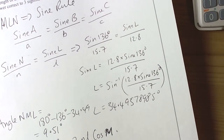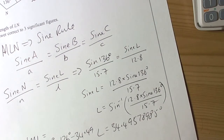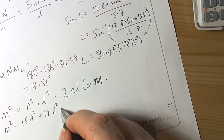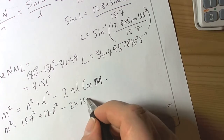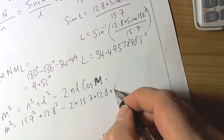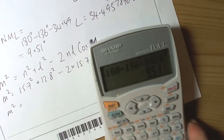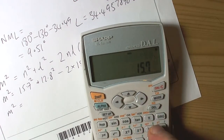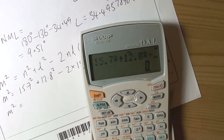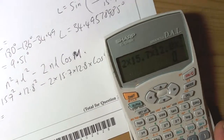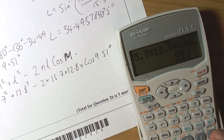Let's put our numbers in. M squared is going to equal N squared — that's 15.7 squared — plus L squared, which is 12.8 squared, take away two times 15.7 times 12.8 times the cosine of 9.51 degrees. We type: 15.7 squared plus 12.8 squared, minus bracket 2 times 15.7 times 12.8 times cosine of 9.51, close bracket, equals.